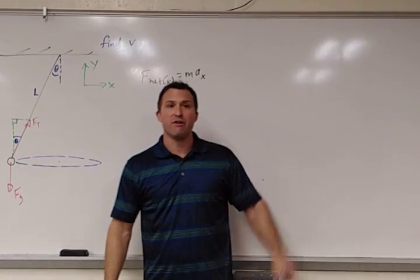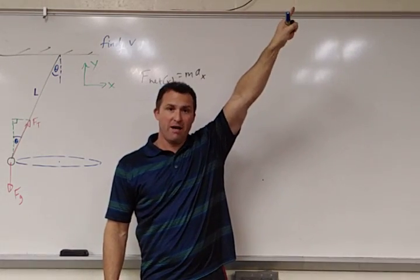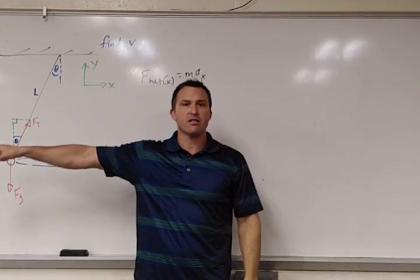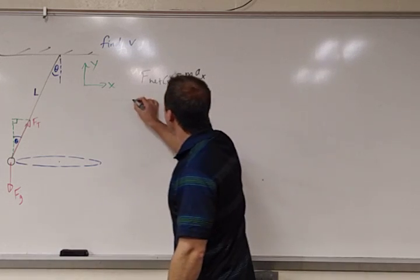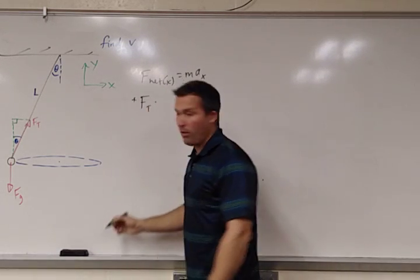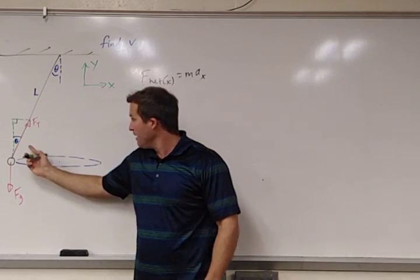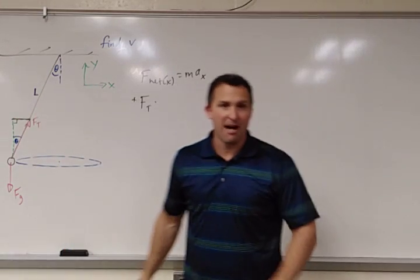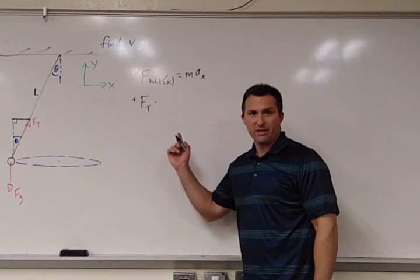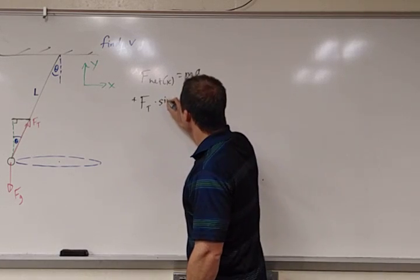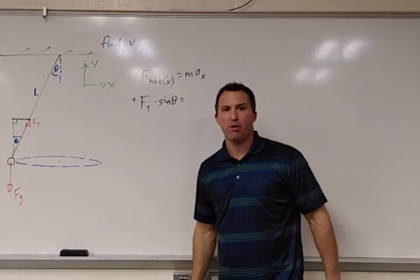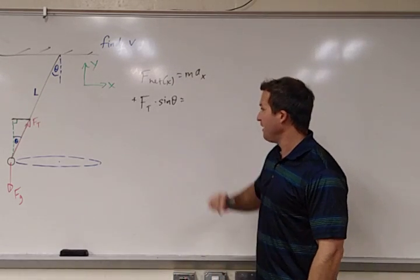Our tension force does have an x component, and we should be able to convince ourselves at this point that it's in a positive direction. Our tension force vector, tension force arrow, is closer to the positive x axis in direction than it is to the negative x axis. So it is positive, and I am going to have to multiply it by either a sine or a cosine. And my x component is this piece right here, which is opposite from my angle, and I know the opposite is proportional to the sine. So that's going to be the times of the sine of theta. And so that's it. We've looked at all of our forces, and we've found our x components and added them up. And now we're ready for this side.